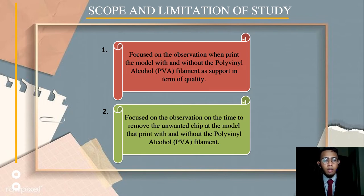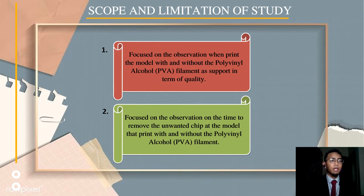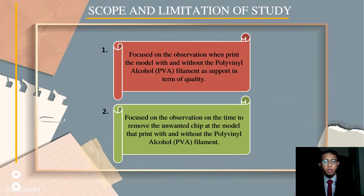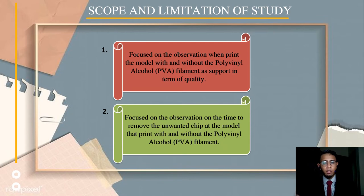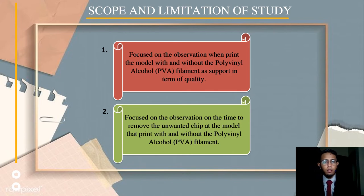In the scope and limitation of study, I am going to print two types of samples. The first sample will be printed using polylactic acid PLA filament. The second sample will print PLA together with PVA, where PVA will be used as a support structure. The first focus is on quality observation of the model with or without PVA support, and the second focus is on time taken to remove the unwanted chip — comparing which method is faster.